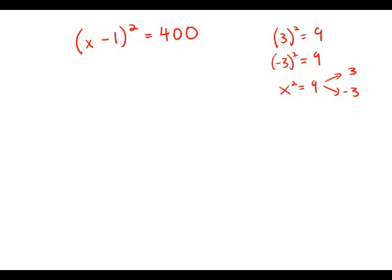So here we have a square, x minus 1 squared equals 400. This means that x minus 1, taking a square root of both sides, x minus 1 either equals 20 or x minus 1 equals negative 20. And either one of those would give us a square of 400.